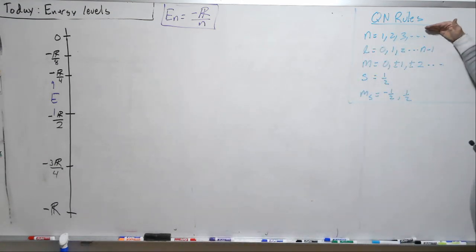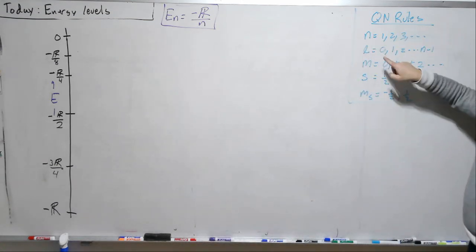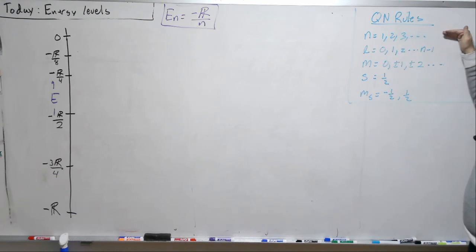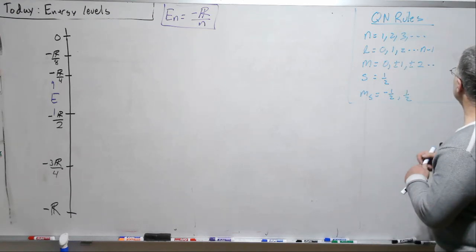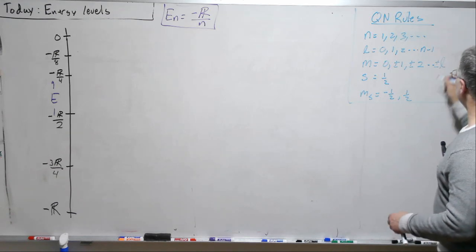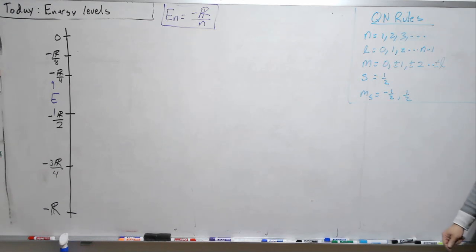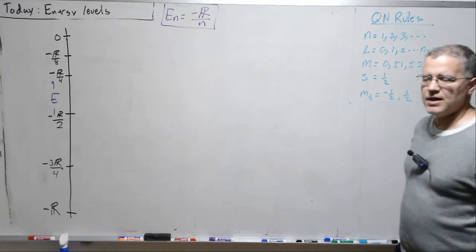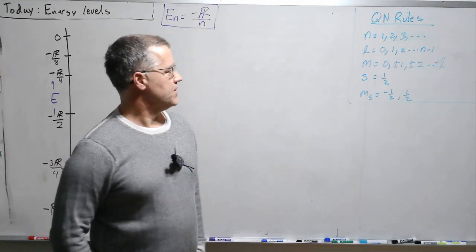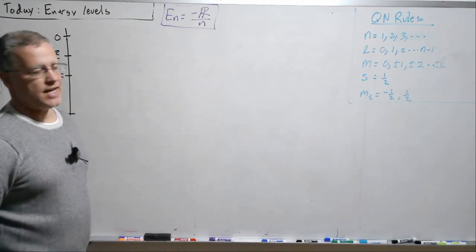The quantum number rule says the principal quantum number n is 1, 2, 3, all the way up unlimited. L is 0, 1, 2 up to n minus 1. m is 0, plus or minus 1, plus or minus 2 up to plus or minus L. So limited by L, and then s is always 1/2 for an electron, and ms is minus 1/2 indicating a spin down and plus 1/2 indicating a spin up.